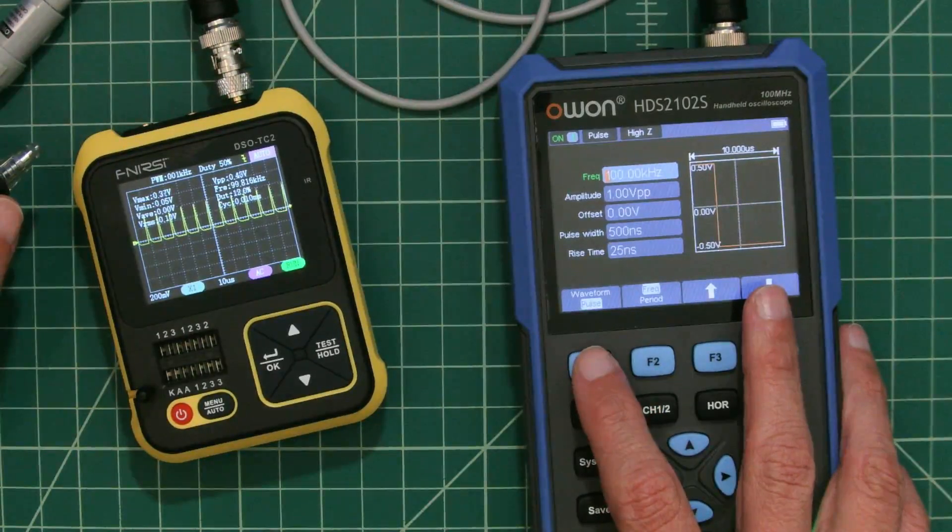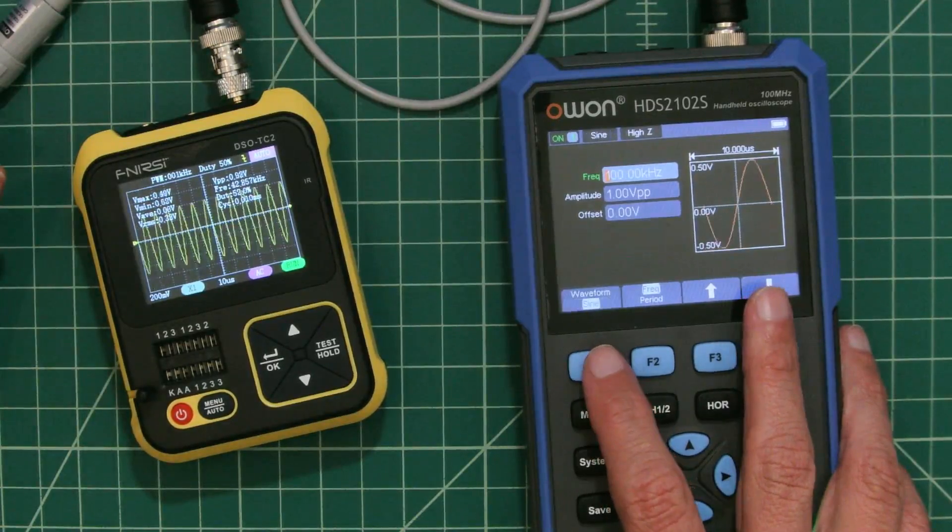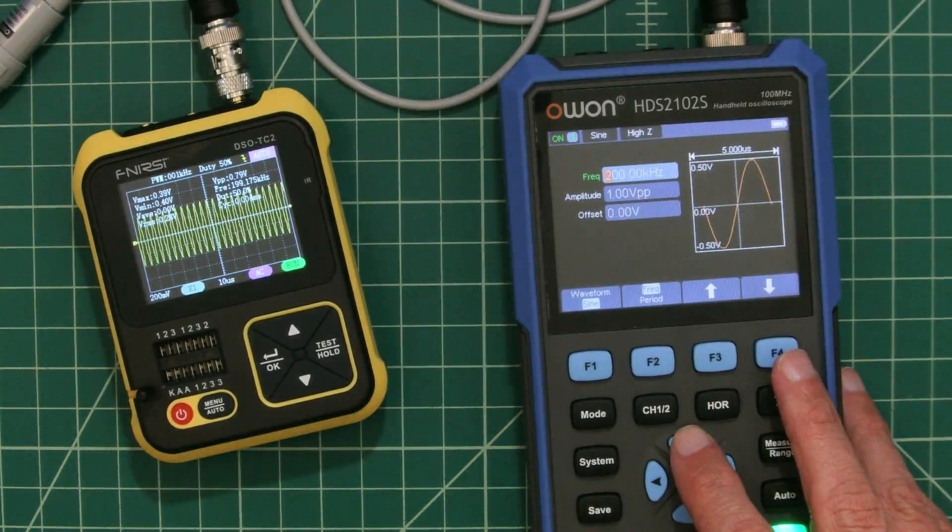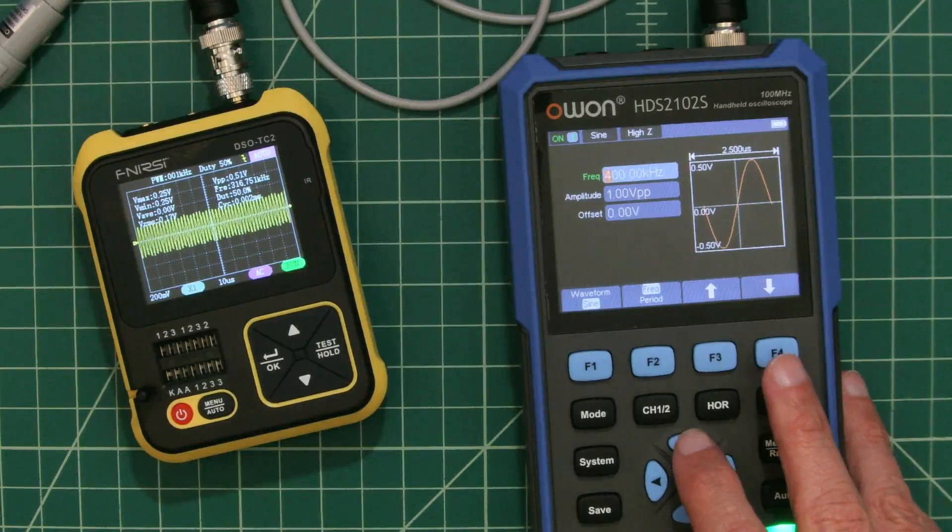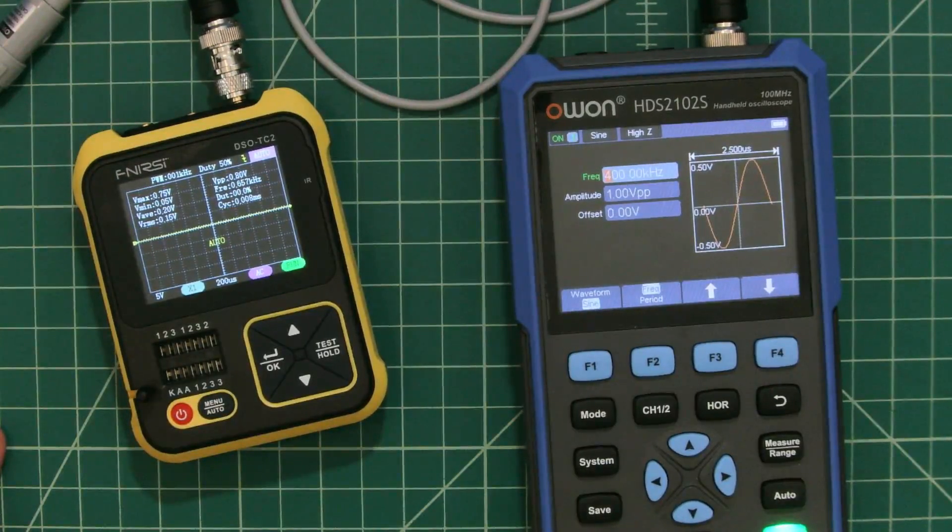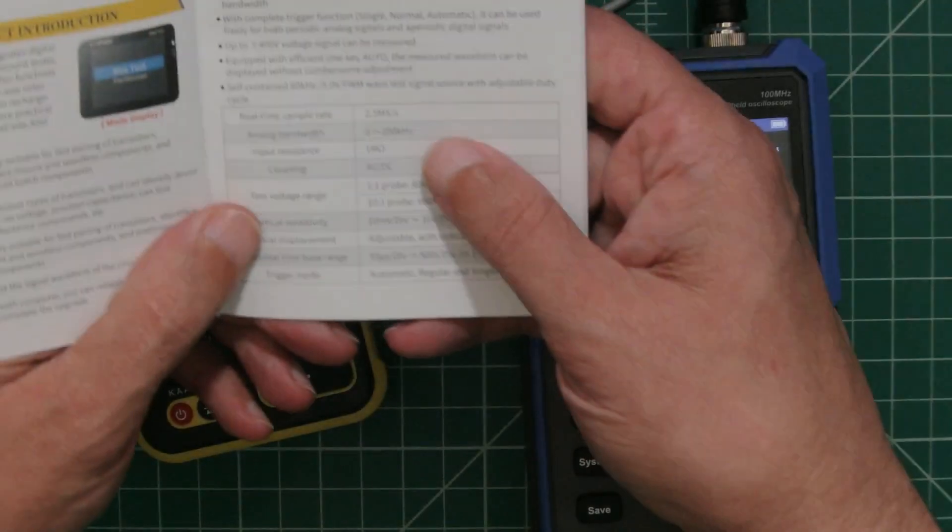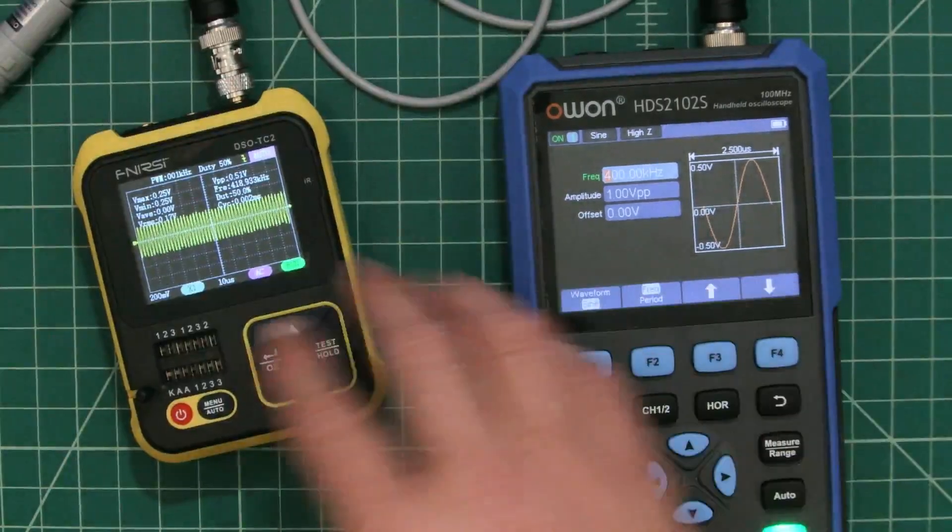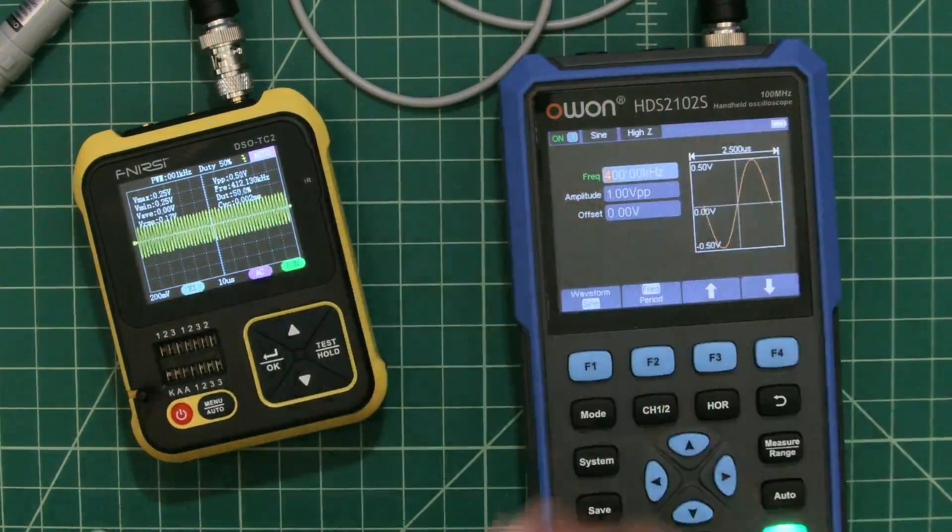It looks like it went to a calibration setting. I guess it calibrates itself. And there's auto. So that is not the best looking signal, but it could be because our frequency is too high. I believe the limitation on this device is 200 kHz. We're not going to hold that against it.